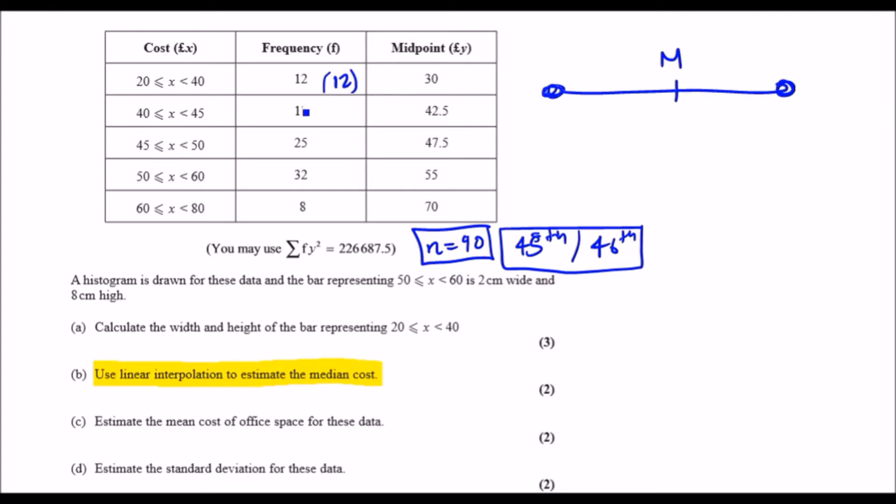At the frequency we've got 12 here, use cumulative frequency. Add 13 more, there'll be 25 up to this point. Add another 25, there'll be 50. So up to this point, the median should lie somewhere in this interval between 45 and 50.